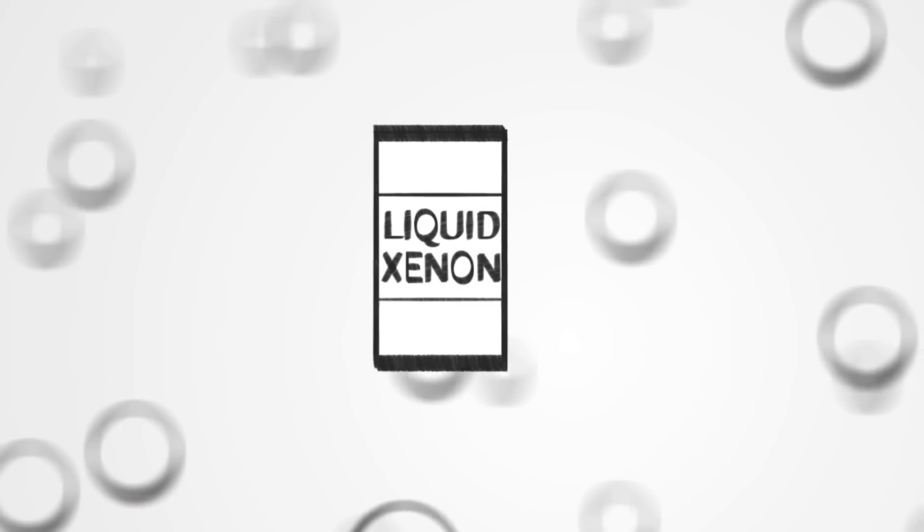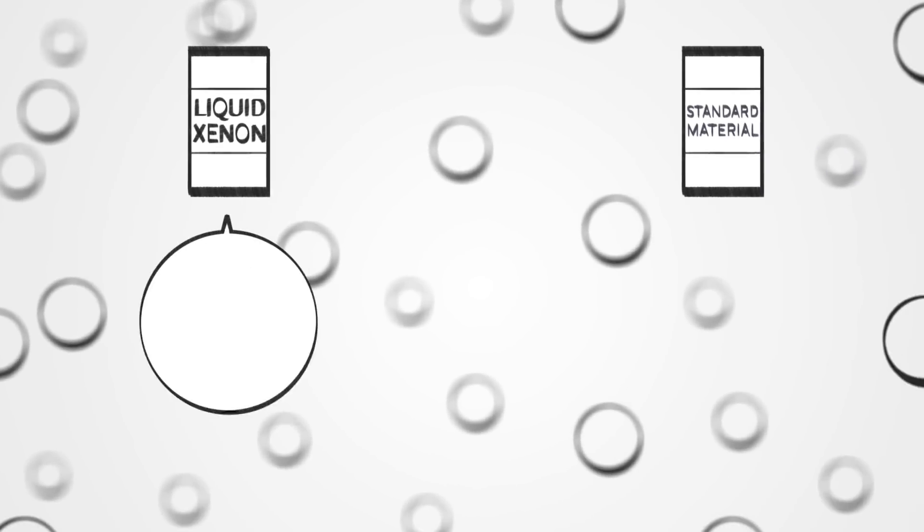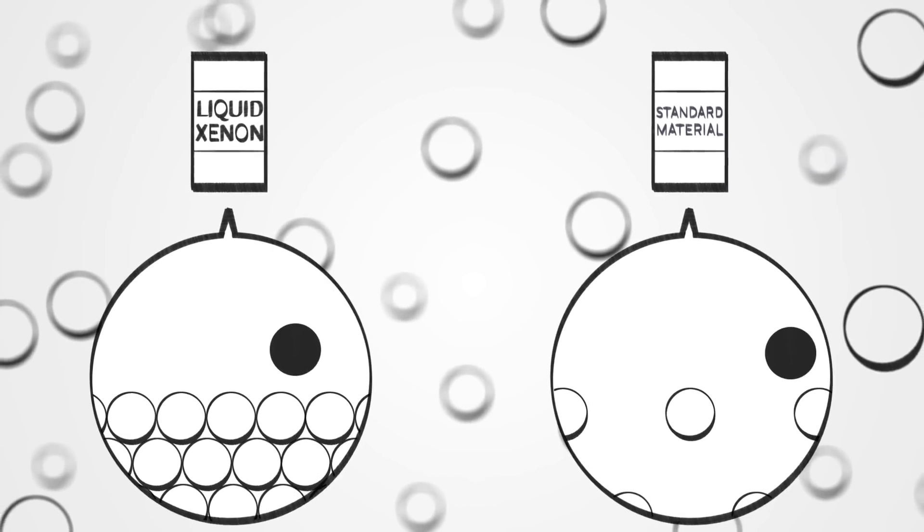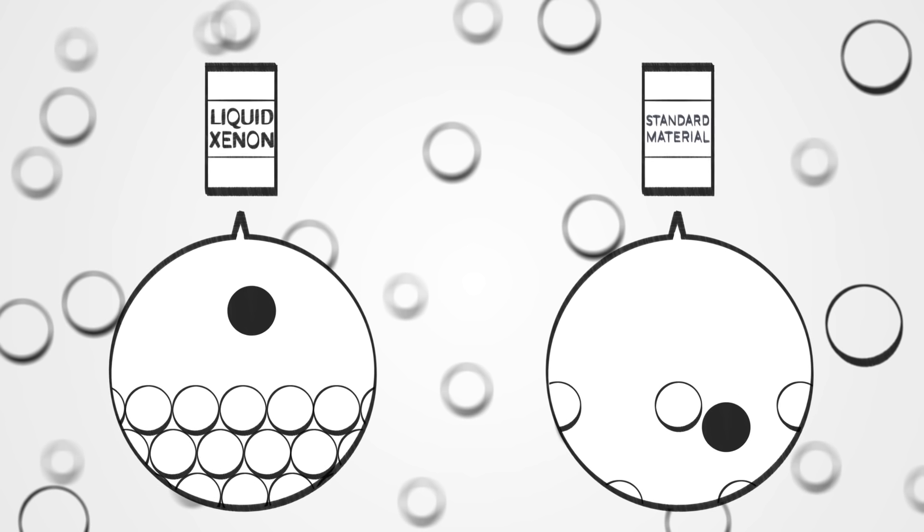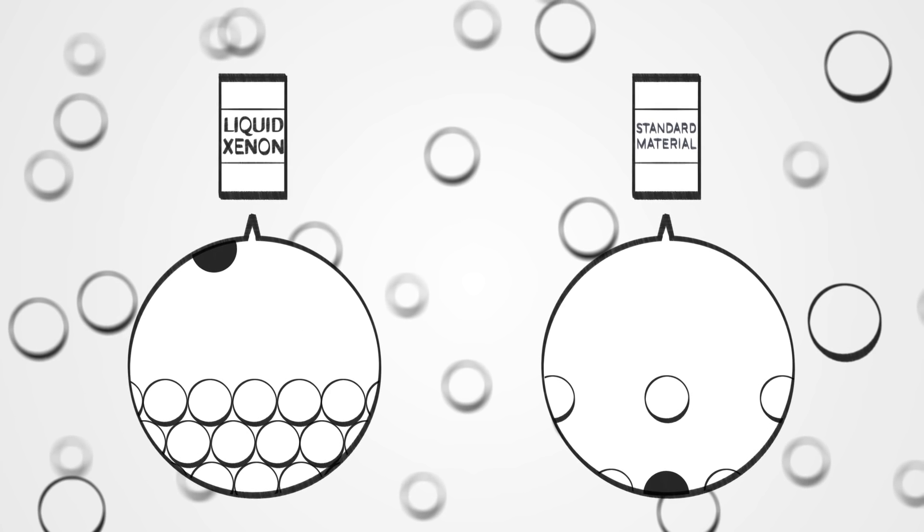Liquid xenon is the perfect substance for Elena's experiments. Its very dense constitution and reactive nature makes an impact with dark matter atoms more likely and easily researched.